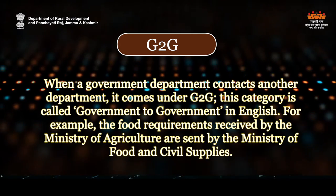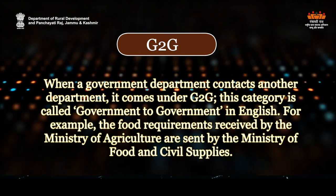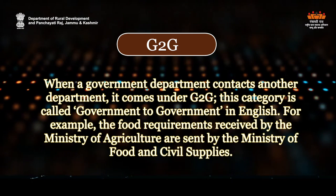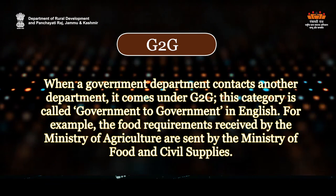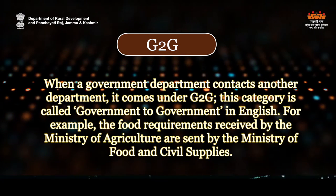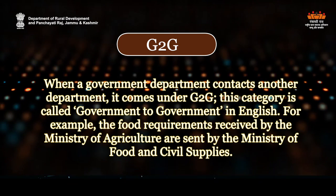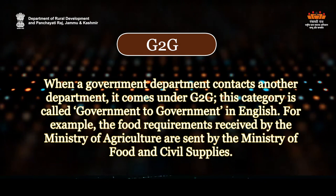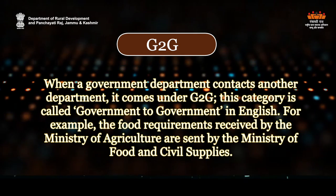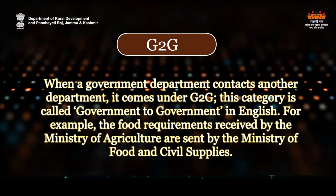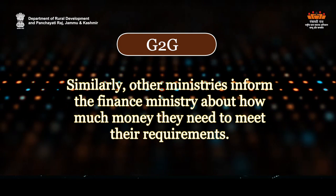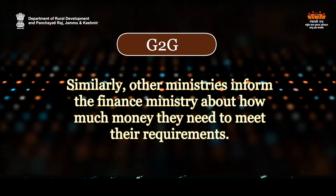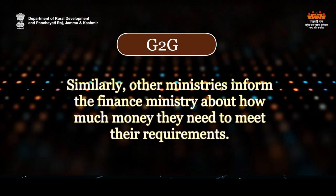G2G: When a government department contacts another department, it comes under G2G. This category is called government to government in English. For example, the food requirements received by the Ministry of Agriculture are sent by the Ministry of Food and Civil Supplies. Similarly, other ministries inform the finance ministry about how much money they need to meet their requirements.